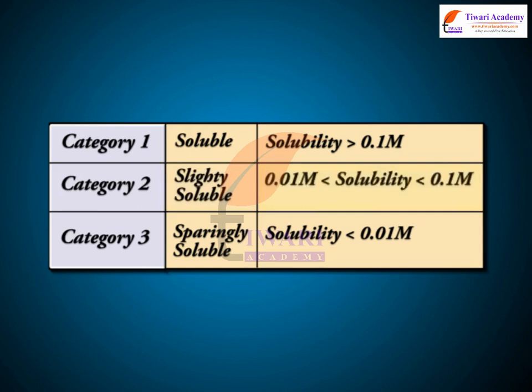Ksp = S × S = S² = 1.1 × 10⁻¹⁰, or S = 1.05 × 10⁻⁵.